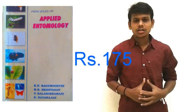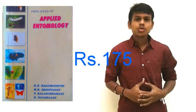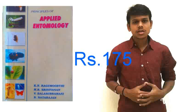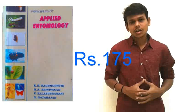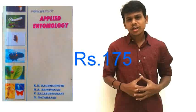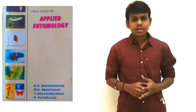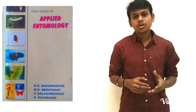Next, book number four: Principles of Applied Entomology by Pragmurthy, Balasubramanian, Srinivasan and Natarajan. In this book, a brief description about apiculture, sericulture, lac culture, pollinators and predators has been given in a descriptive and detailed manner.